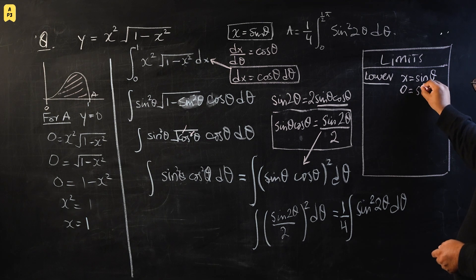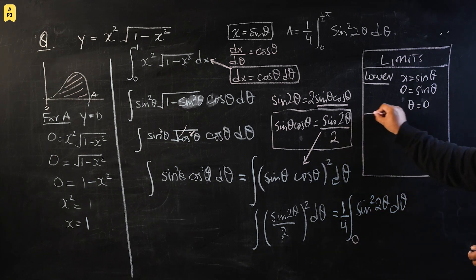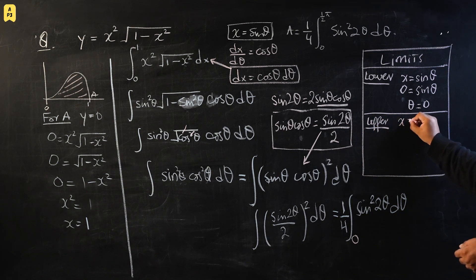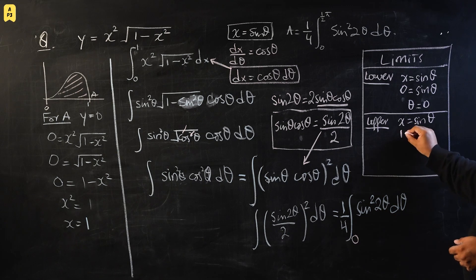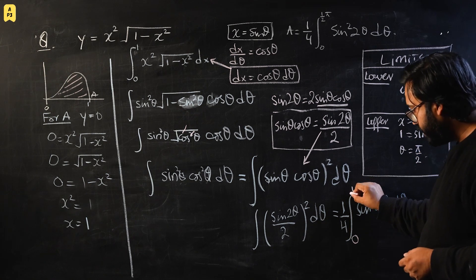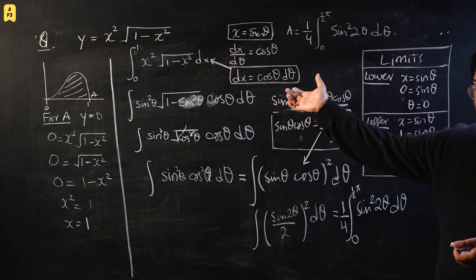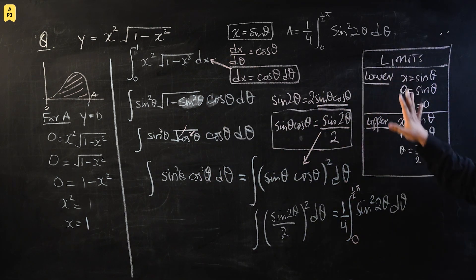This completes the second part. The integral from 0 to 1 of x squared times the square root of (one minus x squared) dx has been shown to equal one-quarter times the integral from 0 to pi/2 of sine squared 2theta dθ. This part checks your depth of understanding of integration by substitution, your ability to maneuver trigonometric identities, and your ability to correctly change the limits.